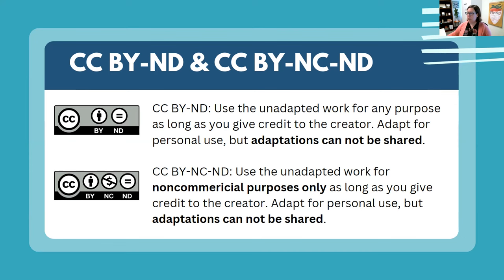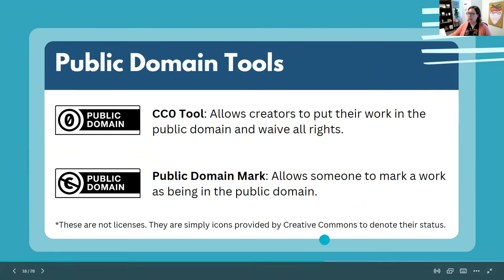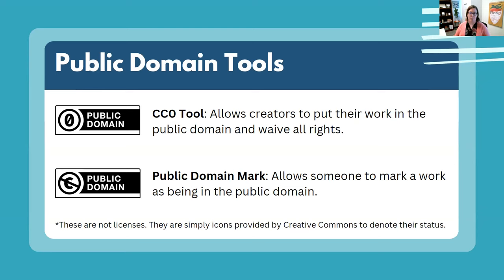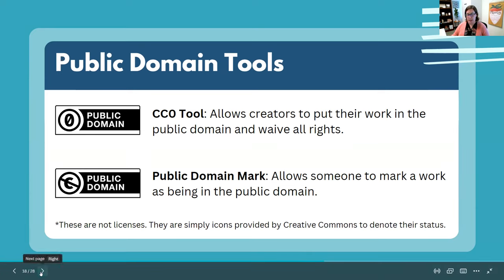There are also two public domain tools — not licenses like the others, but icons Creative Commons made to explain a work's status. The CC0 tool allows creators to put their work in the public domain and waive all of their rights — if you created something and want to release it completely, you mark it CC0. The second is a Public Domain Mark, which means someone other than the creator has marked the work as being in the public domain, so other people will know that's where it stands.